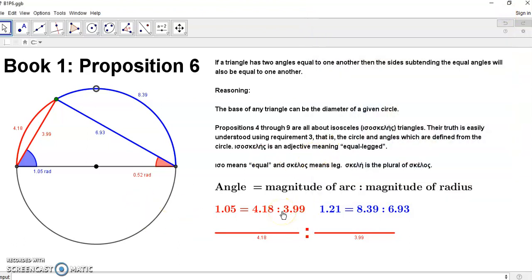In the past videos I've been dealing with the first five propositions of Euclid, and in this video I'm going to deal with proposition six of Euclid. I want to first inform you that propositions four through nine are all about isosceles triangles.